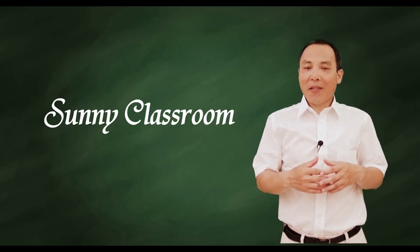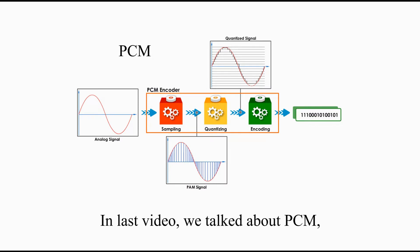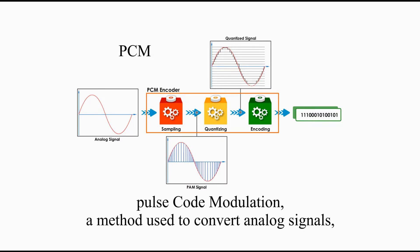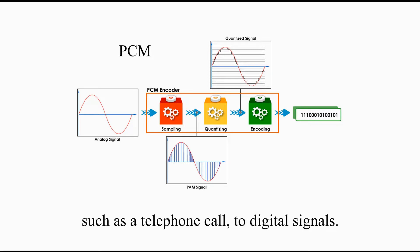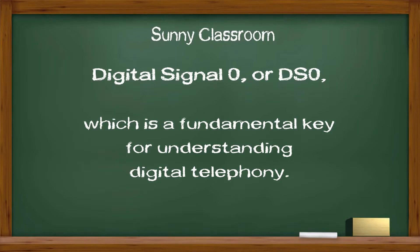Hello, and this is Sunny. Welcome back. In the last video, we talked about PCM, Pulse Code Modulation, a method used to convert analog signals, such as a telephone call, to digital signals. PCM is the basis for understanding today's topic, Digital Signal Zero, or DS0, which is a fundamental key for understanding digital telephony.